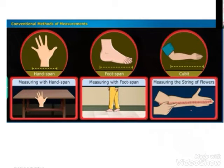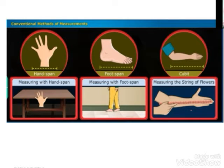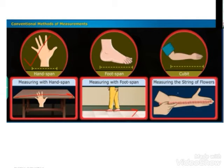So children, if we travel back in time when there was no concept of measurement, the people at that time used hand span, foot span, and cubit for measurement because they did not have any machines to help them. With the help of a hand span, they used to measure — say, the length of a table. Then there is measuring with a foot span, and then measuring the length with the help of a cubit. The cubit is from the tip of your finger to the end of your elbow.